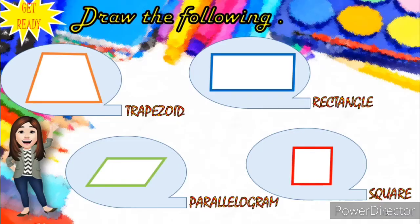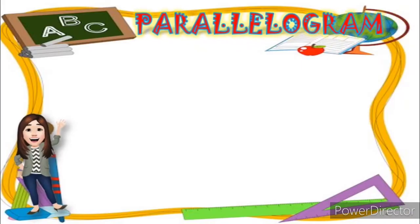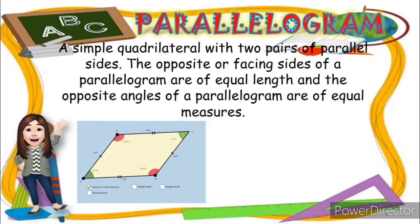These four polygons are all part of the quadrilateral family. As I said earlier, the quadrilateral is a four-sided polygon, and one of which is the parallelogram. Let's know more about the parallelogram: it is a simple quadrilateral with two pairs of parallel sides. Can we observe this one?